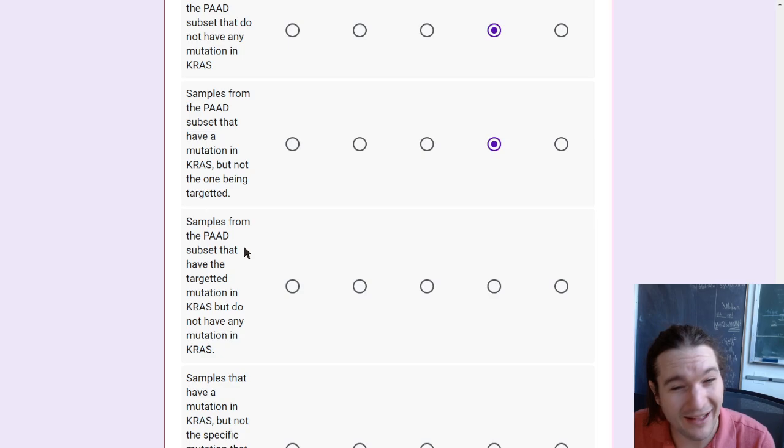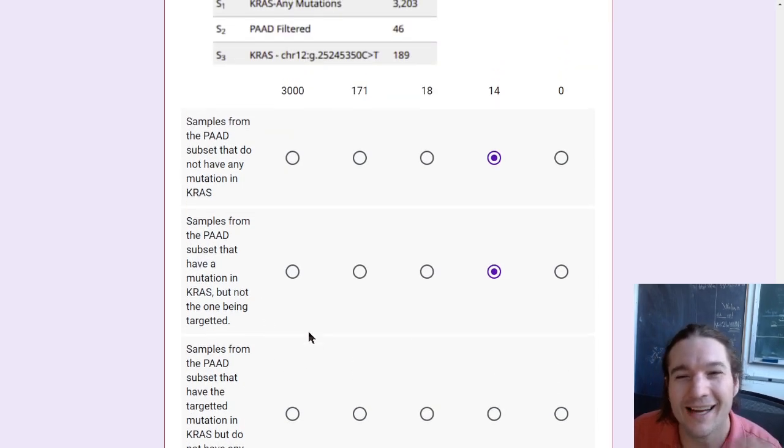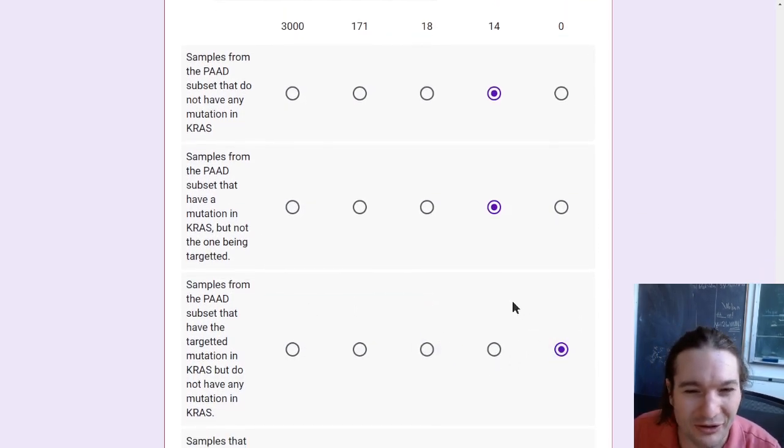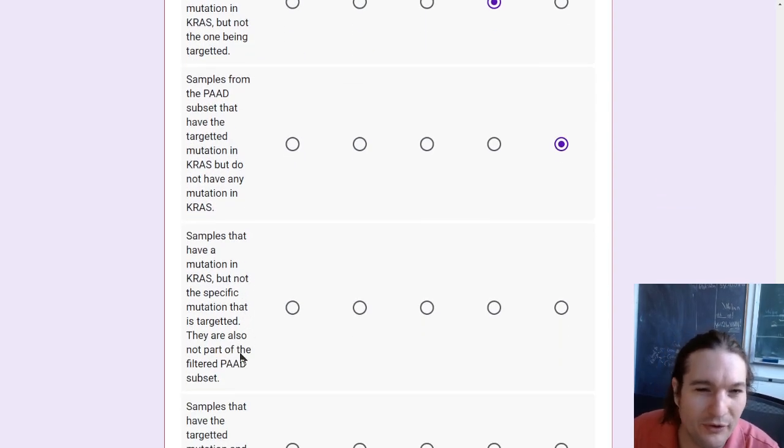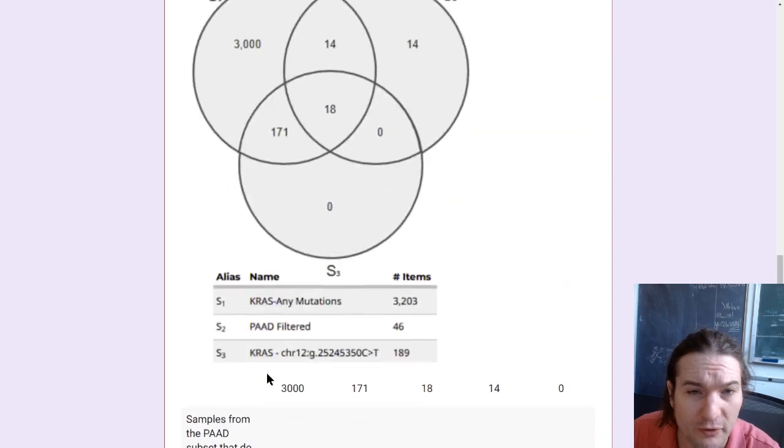Samples from the pad subset that have the mutation in KRAS, but do not have any mutation in KRAS. If that sentence reads weird, it's because that's going to be an impossible combination of properties. Like if you have a mutation in KRAS, then you have a mutation in KRAS.